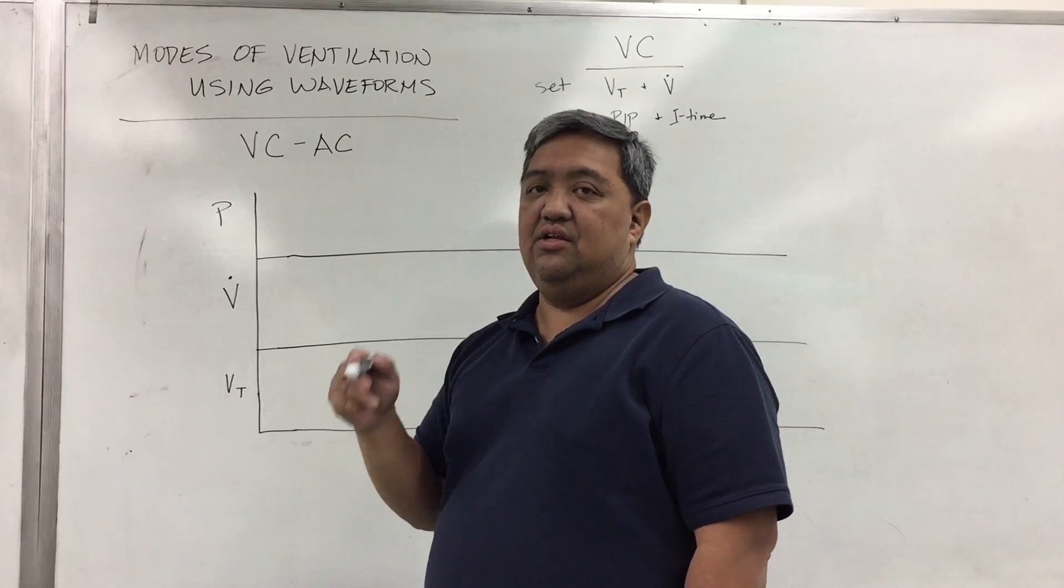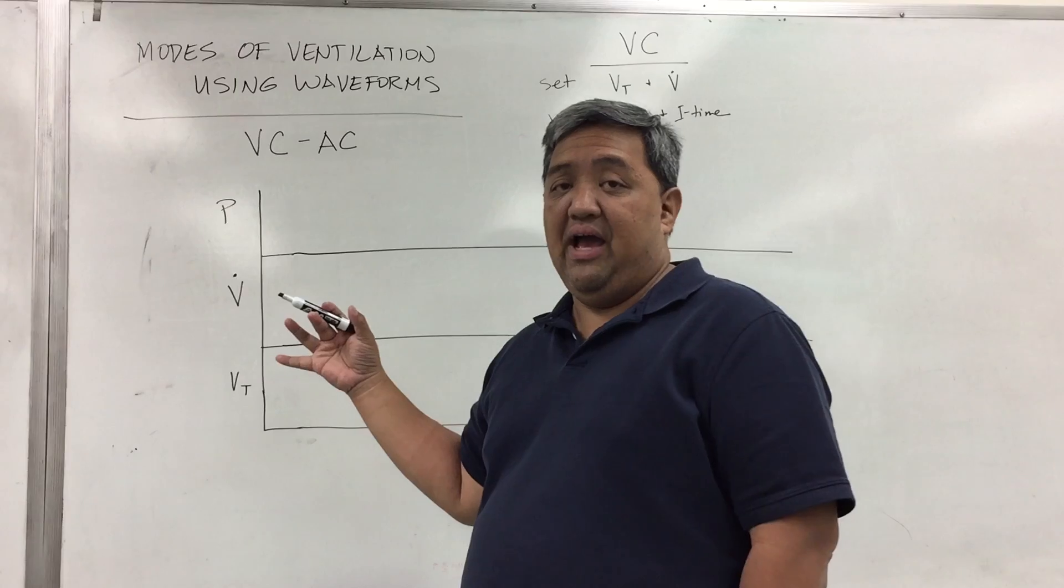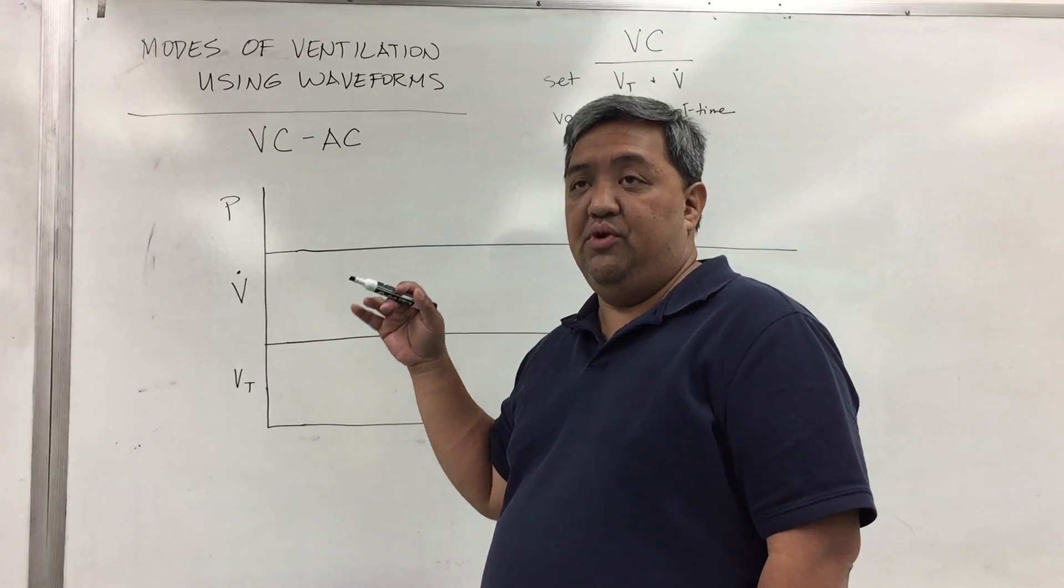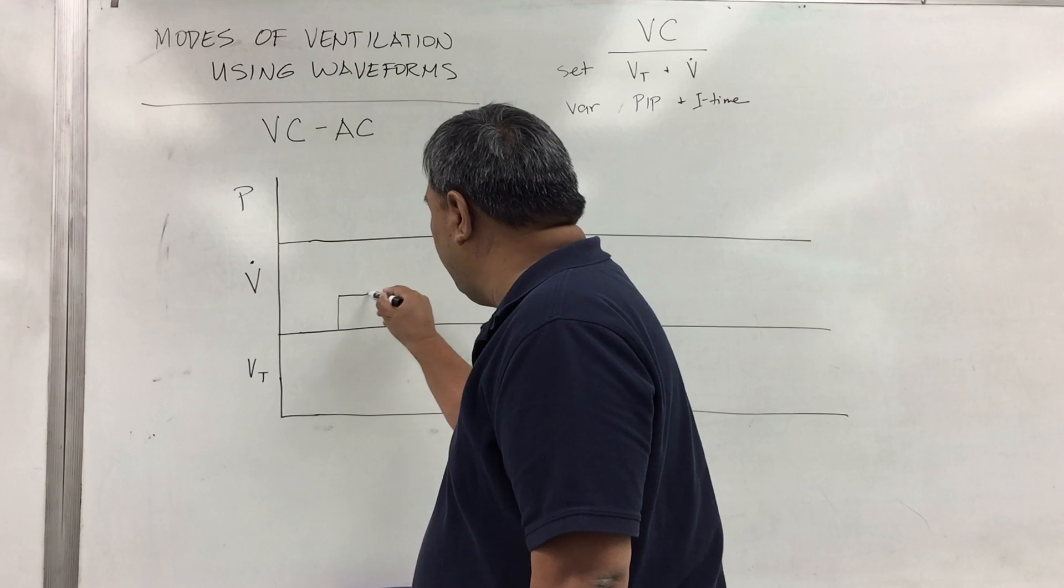So if you have a set flow and we've talked about the different flow patterns or the different waveforms in which the set is a square. So that means a square waveform.